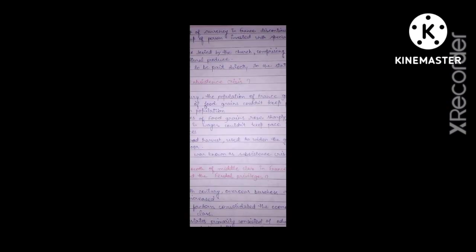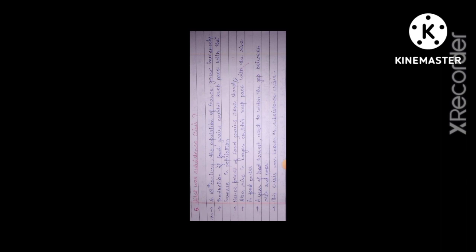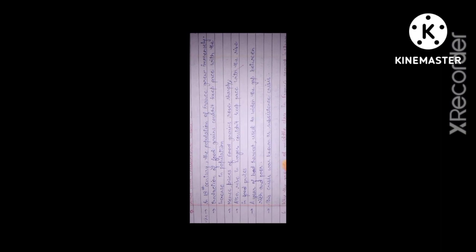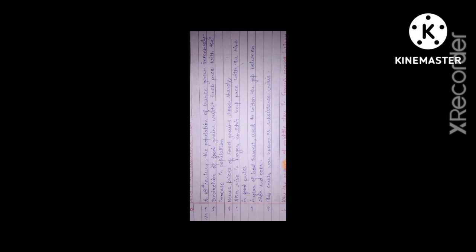A year of bad harvest used to widen the gap between the rich and the poor. This crisis was known as the subsistence crisis. It's a very straightforward answer: 18th century, population of France grew enormously, production of food grains couldn't keep pace, prices rose sharply, wages couldn't keep pace, bad harvests widened the gap — all of this gave rise to the subsistence crisis.